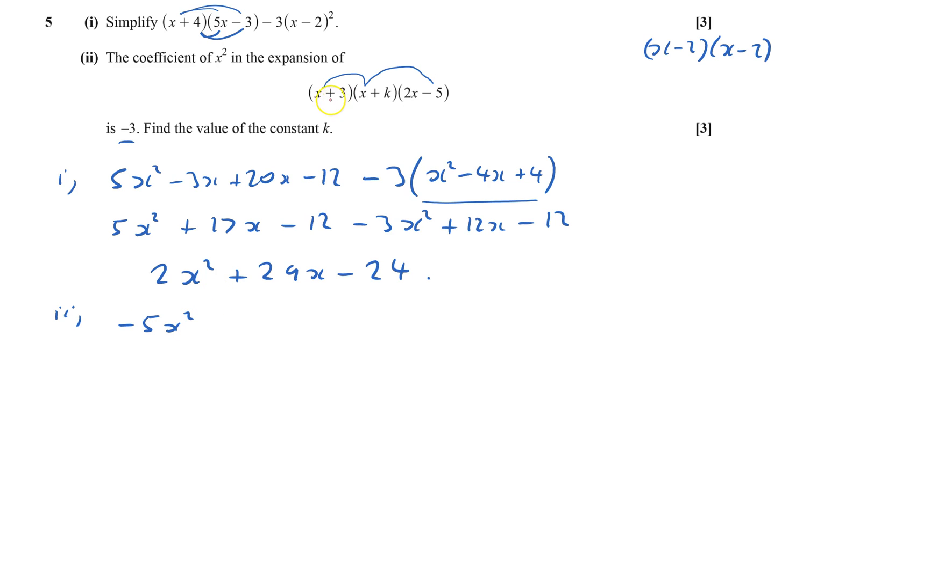Or I could have an x in this one, the k in this one, and the x in that one, so that would be plus 2kx squared. Or I could have a number in the first one, and then the x, and then the x, and that'll be 6x squared.